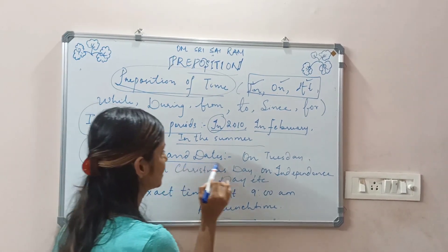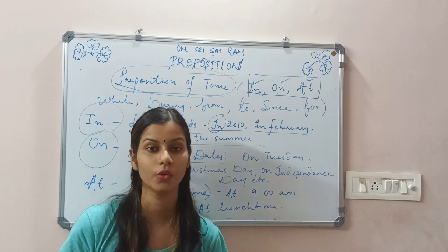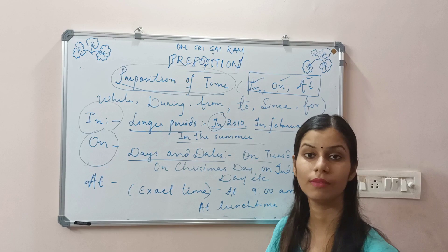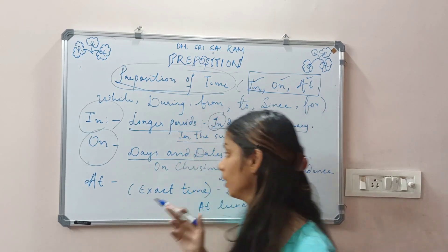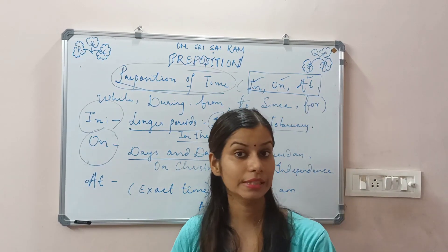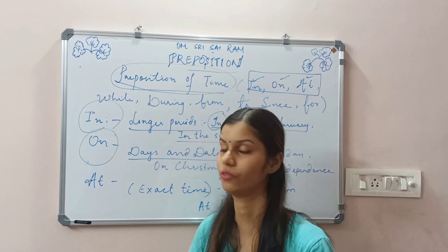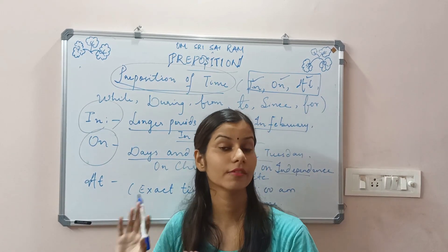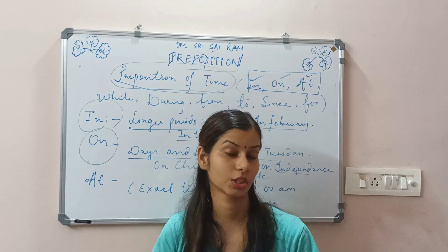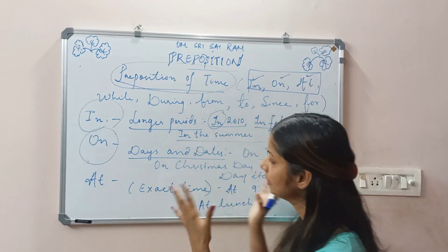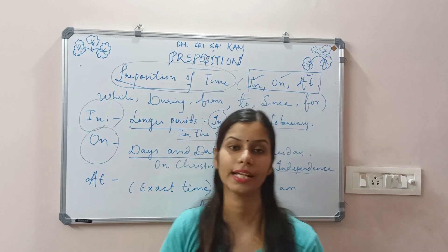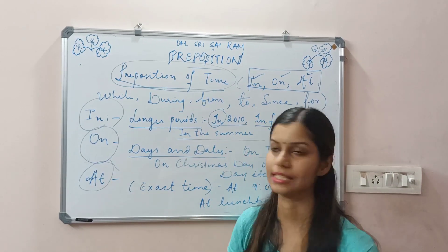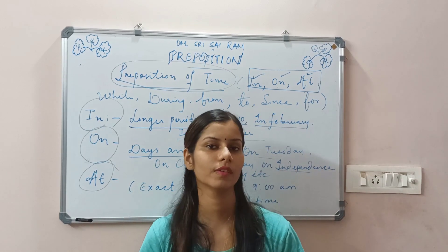Next, we move to 'on'. We use 'on' for days and dates. For example: 'On Tuesday, I will not go to school,' 'On Christmas Day' — that means an event or celebration. 'On Independence Day' — that means it is a festival, a celebration, or an observation day. All these kinds of words we use under the category of 'on'.